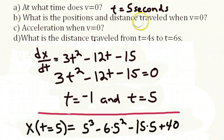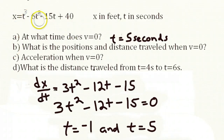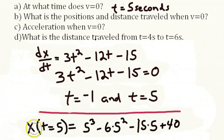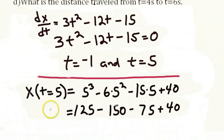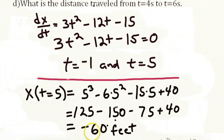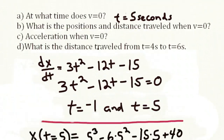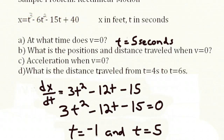The next question is: what is the position and distance traveled when the velocity equals zero? We know velocity equals zero at five seconds, so we plug t equals five into the equation of motion. x at t equals five seconds equals five cubed minus six times five squared minus 15 times five plus 40, which equals 125 minus 150 minus 75 plus 40, giving a position of minus 60 feet. The position at t equals zero is plus 40 feet.